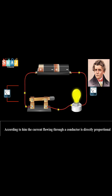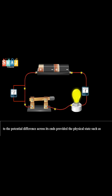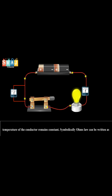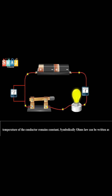According to him, the current flowing through a conductor is directly proportional to the potential difference across its ends, provided the physical states such as temperature of the conductor remains constant. Symbolically, Ohm's law can be written as V is proportional to...